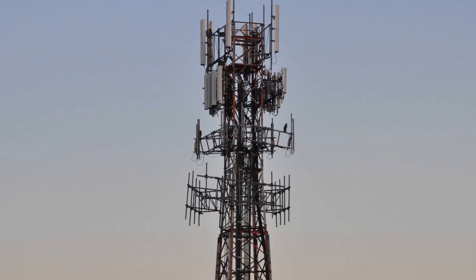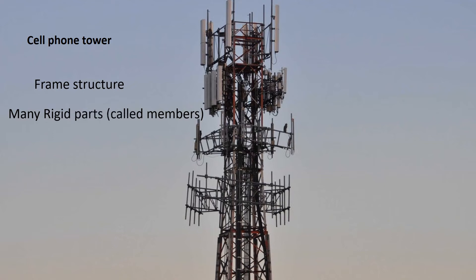Good day grade 7s and welcome to unit 3. In this unit we will be investigating a cell phone tower as an example of a frame structure. As you have already learned, frame structures consist of many rigid parts called members that are joined together to form the structure. These members are usually beams, which have different names depending on their location and function in the structure.